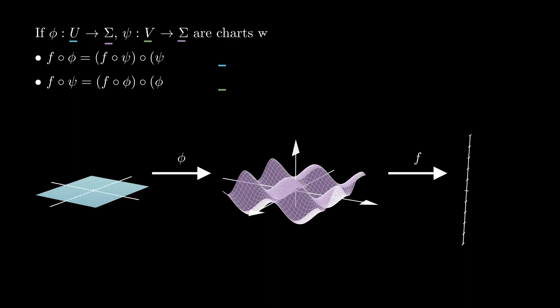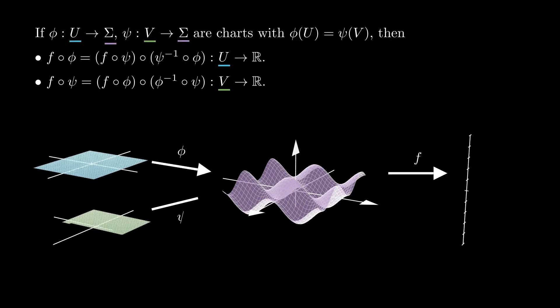Due to the observation above and the chain rule, this definition does not depend on the chart we use. If we consider a function f from sigma to rk and two charts phi and psi with the same image, then f composed with phi is smooth if and only if f composed with psi is smooth. This is because we can write f composed with phi as f composed with psi composed with a change of coordinates and vice versa.